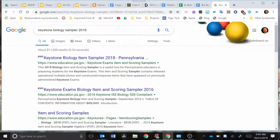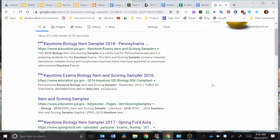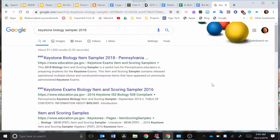So what I did here is I just typed in Keystone Biology Sampler, and I have some examples here of released items from the state of Pennsylvania. And you can do this for your specific test. You should be able to find those with a Google search.